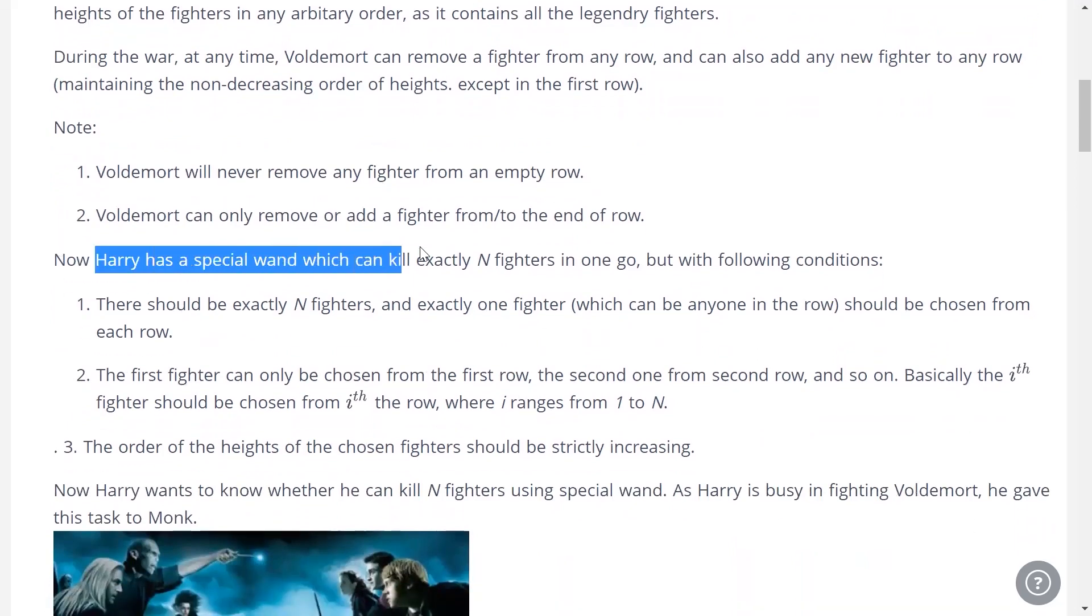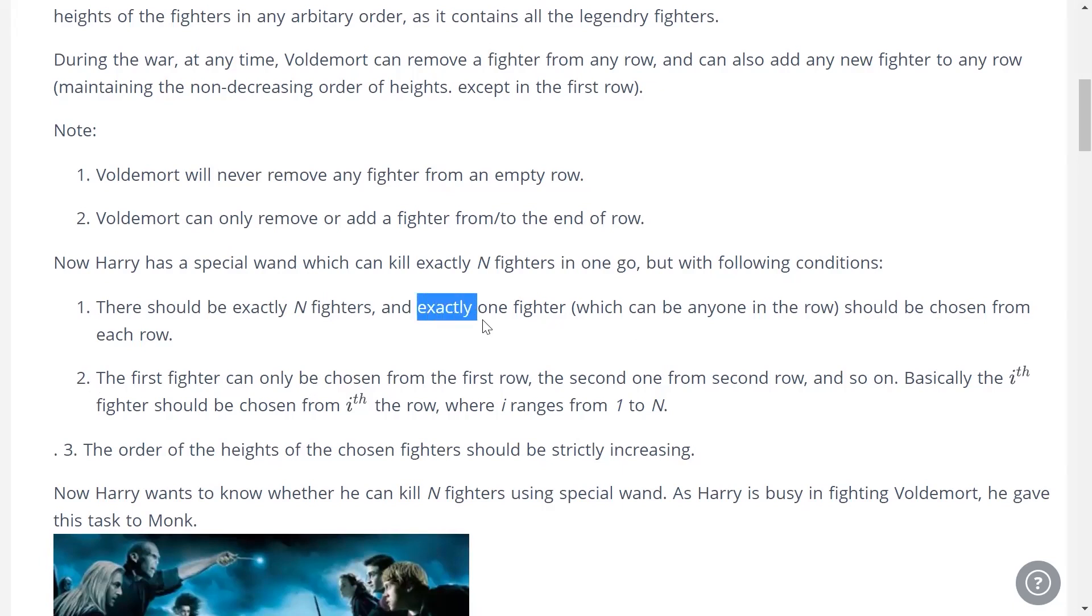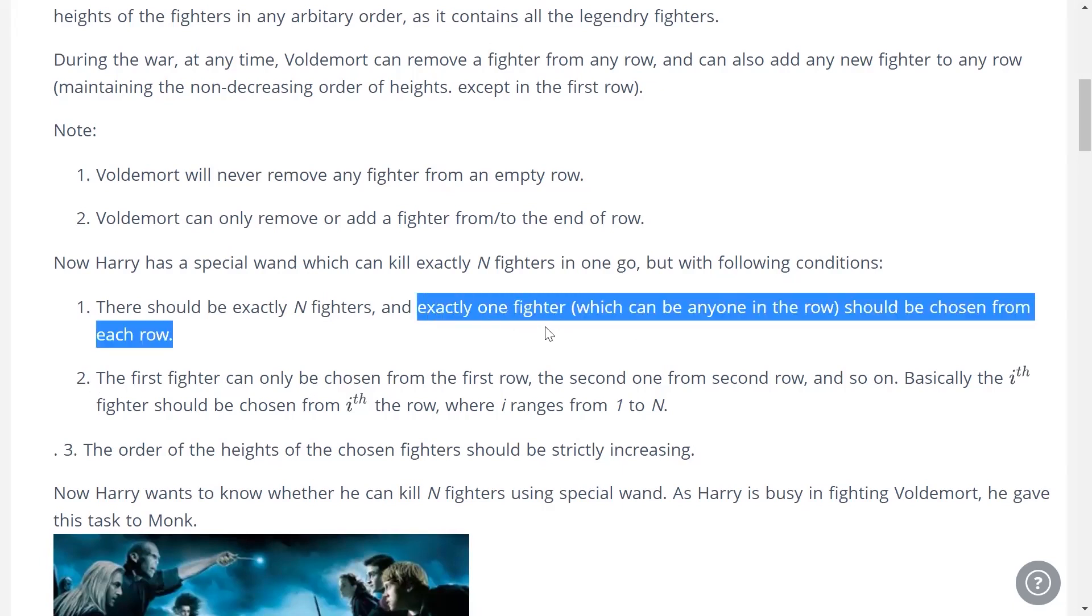Harry has a special wand that can kill exactly N fighters in one go. Something doesn't sit right with me - Harry doesn't kill, let's call it disarm. He has a wand that can disarm N fighters, but with the following conditions. First, exactly one fighter should be chosen from each row. In other words, the row can't be empty.